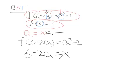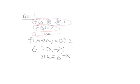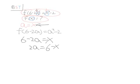Because we want to find out what f of x is. So, solve the equation 2a equals 6 minus x. A equals 6 minus x over 2.